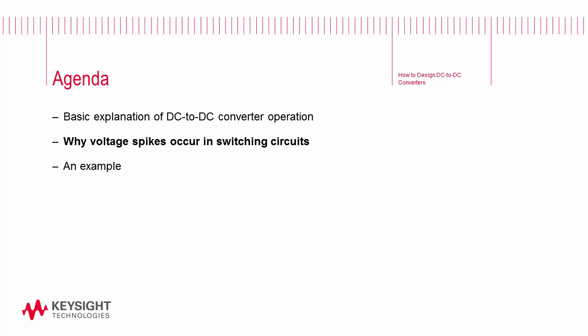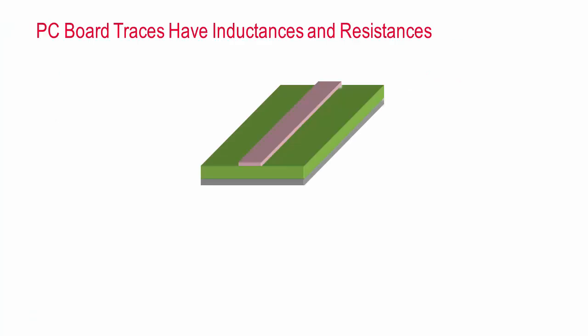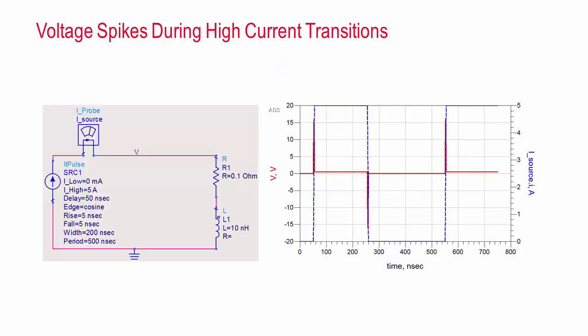How do fast signal transitions and parasitic elements lead to undesired voltage and current spikes? Traces in the layout behave like inductances and they add resistances. Any change in current will induce undesired voltages as shown by this equation. A pulse current driving an inductor shows voltage spikes during the time intervals when the current is increasing or decreasing.